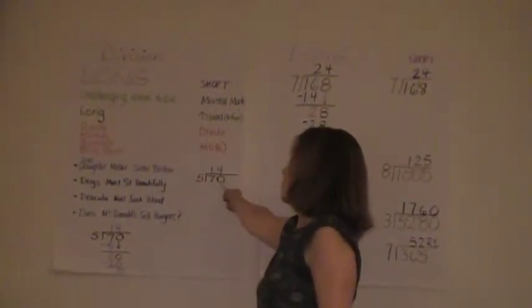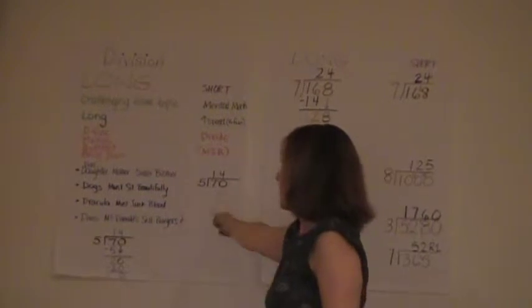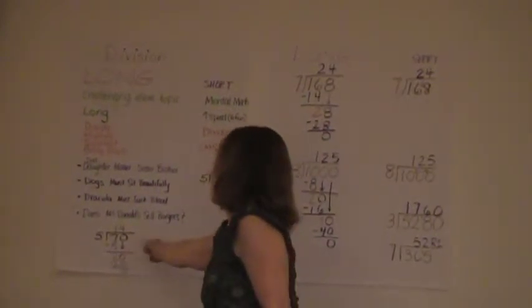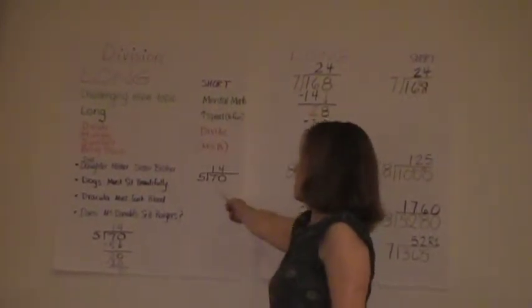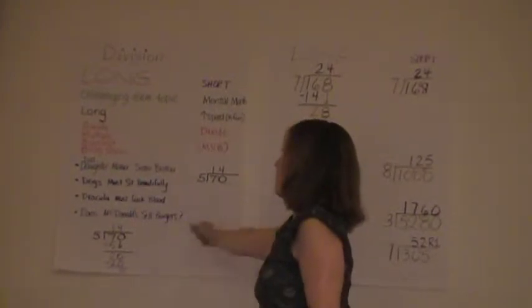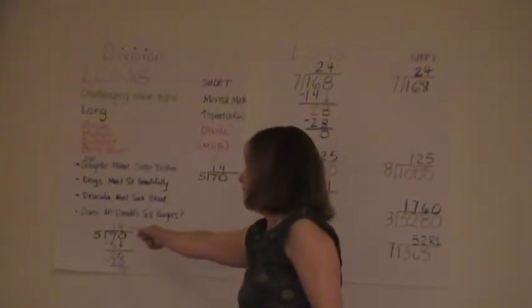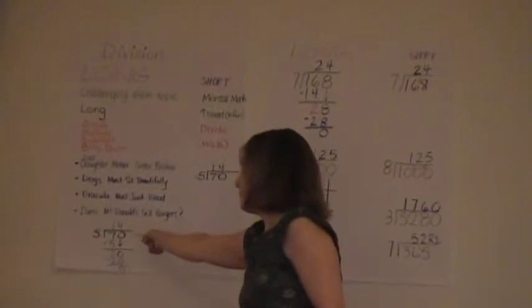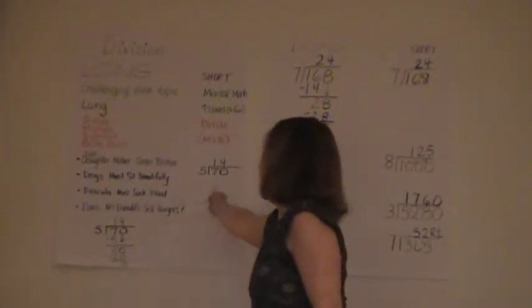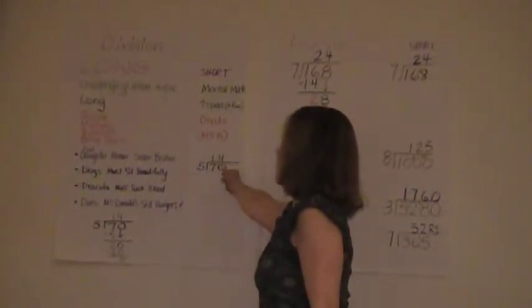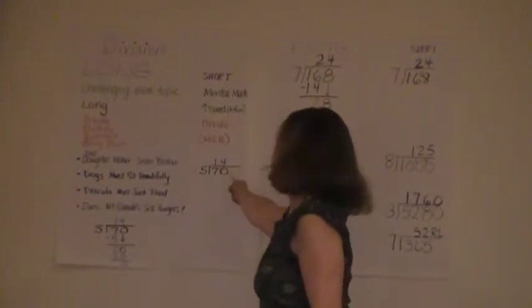So the next problem is 5 into 20. This 2 over here matches the 20 over here. And so what you're doing is you're then going on to the next problem. Here there were two problems, 5 into 7 and then 5 into 20. And here what we've done is 5 into 7 is 1 and then 5 into 20 is the second problem.